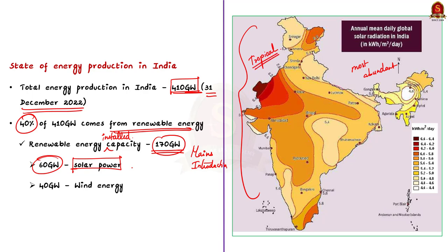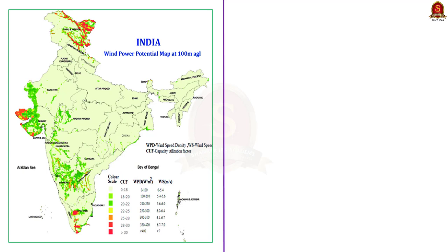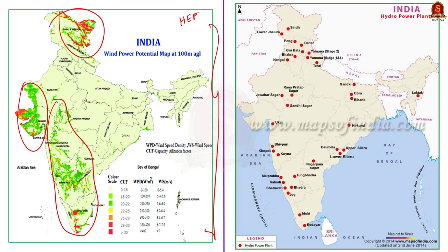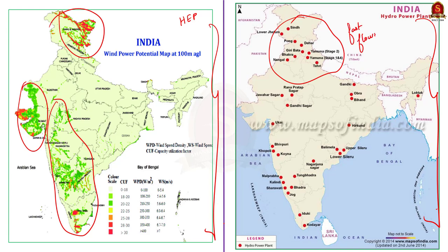Next comes wind energy. Wind energy produced in India comes to nearly about 40 gigawatts. A map shows the wind energy potential of India. Then comes other renewable energy sectors like hydroelectric power and nuclear power. The major hydroelectric power production sites are located in the western part of the Himalayas due to the fast-flowing nature of rivers present there.